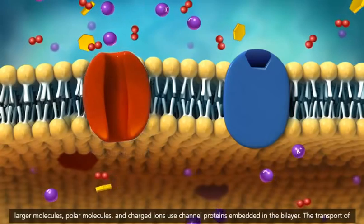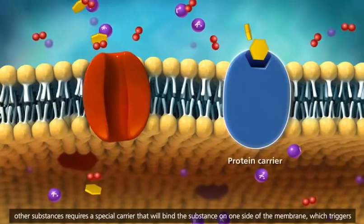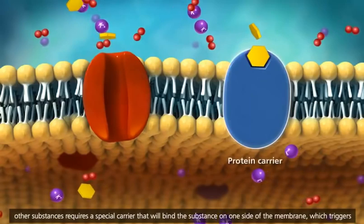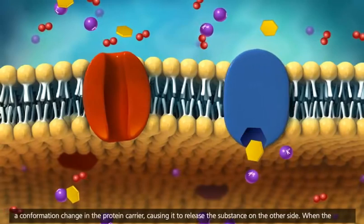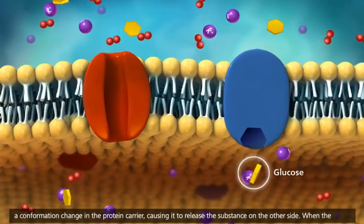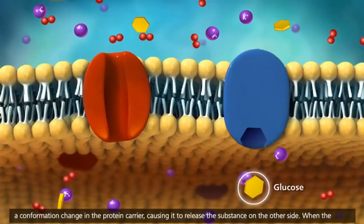The transport of other substances requires a special carrier that will bind the substance on one side of the membrane, which triggers a conformation change in the protein carrier, causing it to release the substance on the other side.